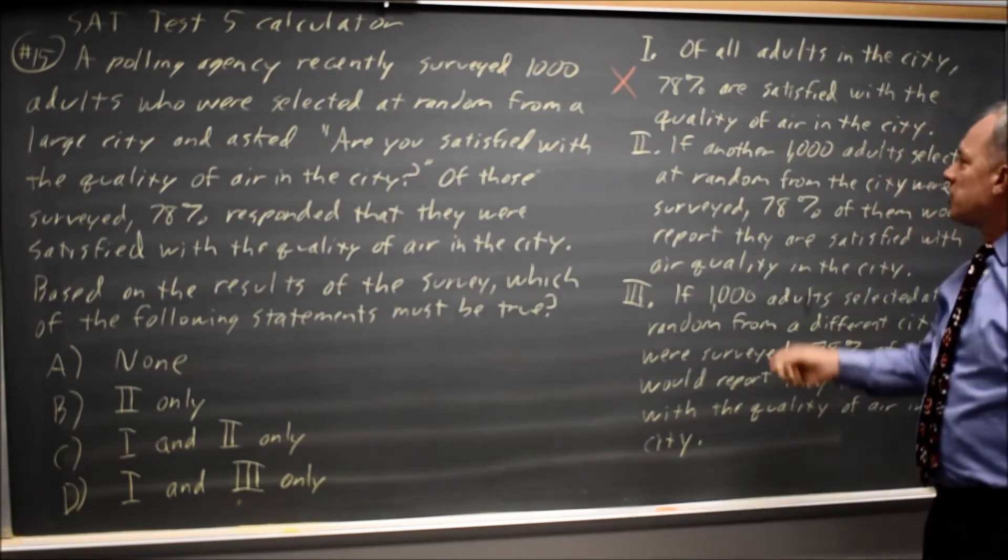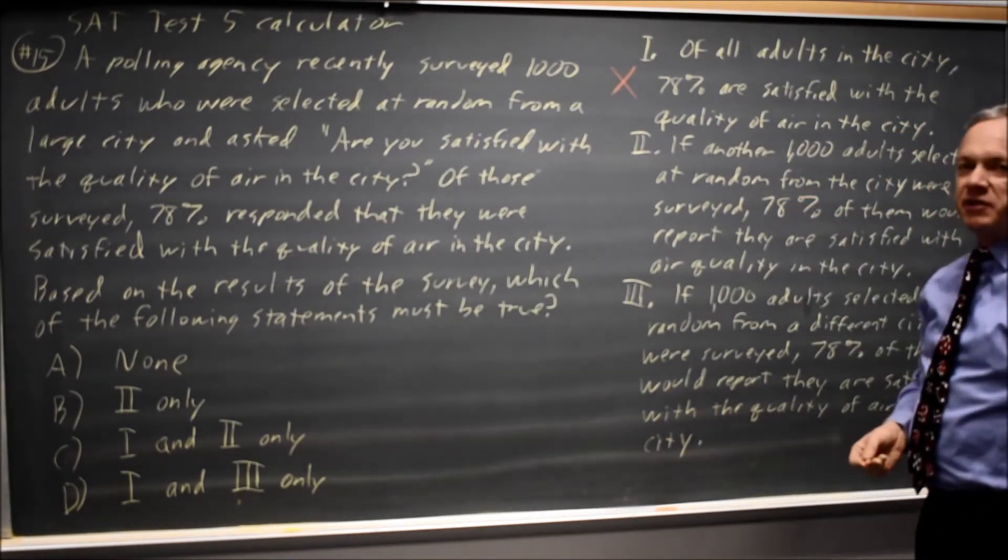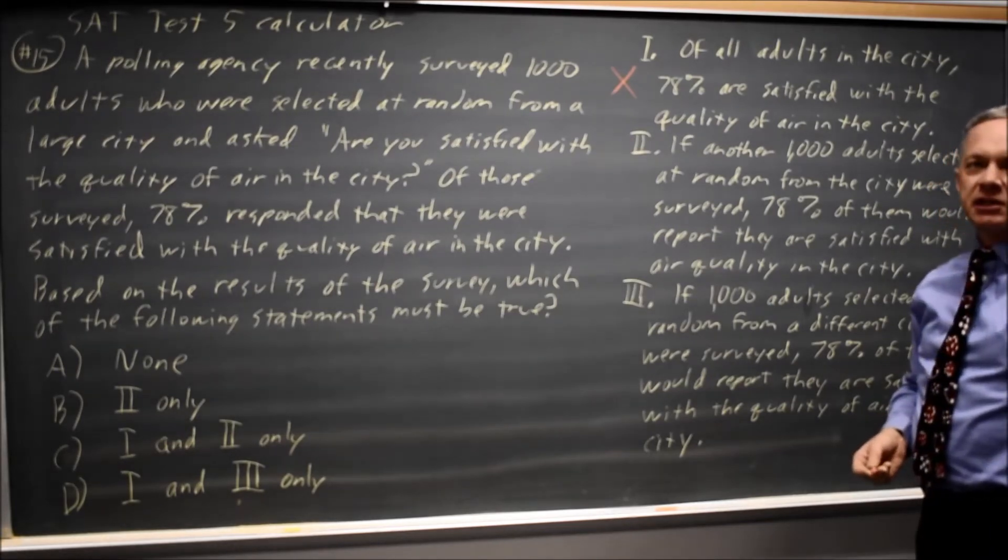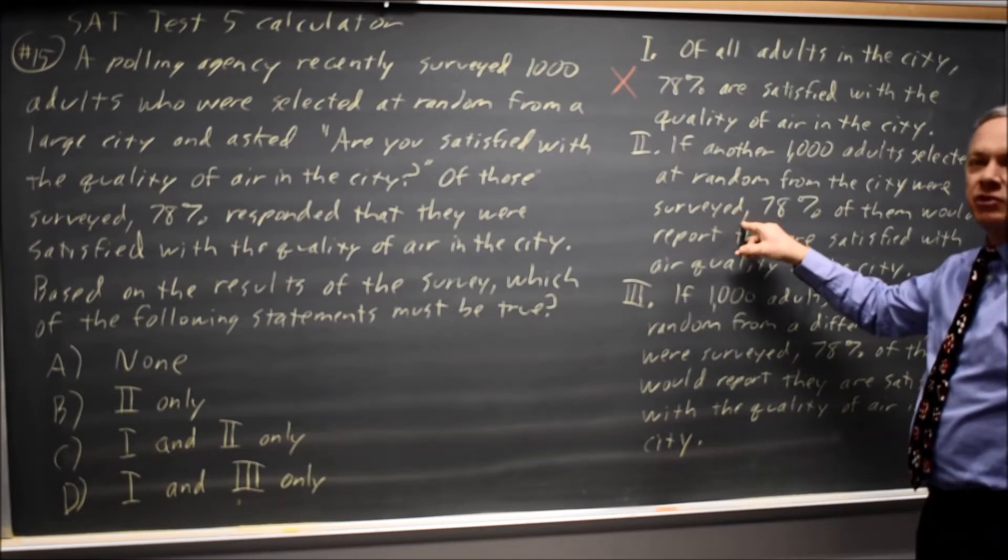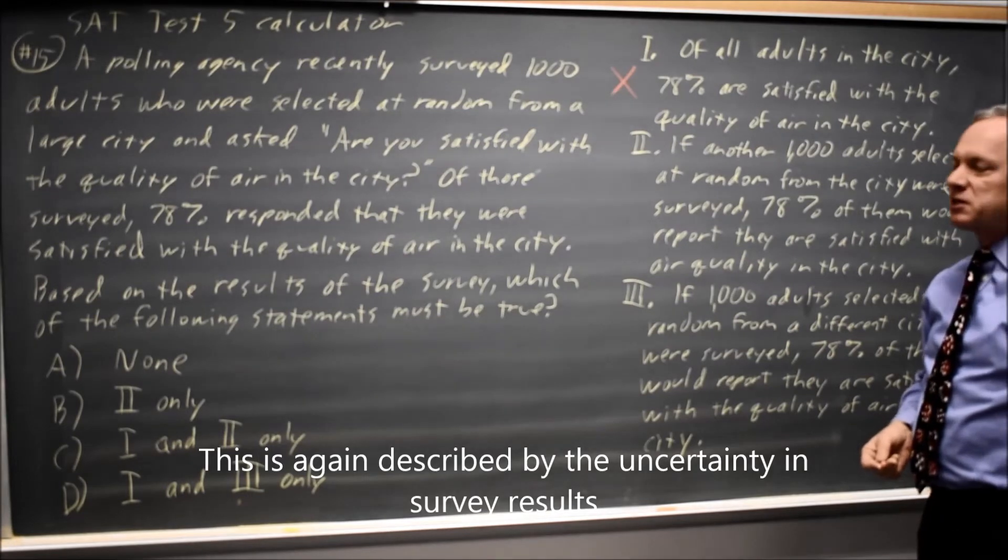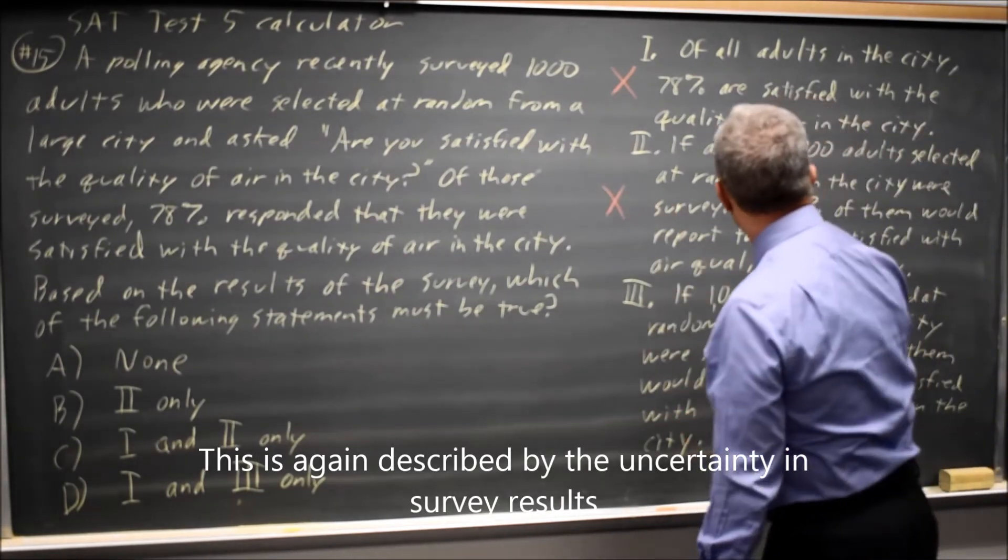Choice 2. If another 1,000 adults selected at random from the city were surveyed, 78% of them would report that they are satisfied with the air quality in the city. Again, because of random variation in which individuals happen to be chosen, you can't guarantee you will get exactly the same result twice in a row from a survey. So choice 2 is not correct.